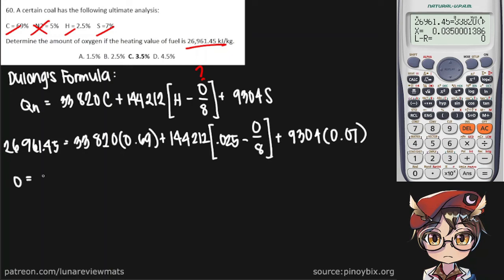O is equal to 0.035. Convert that into percent. It is 3.5%. And the answer is C.